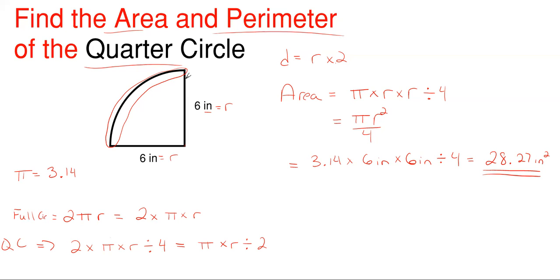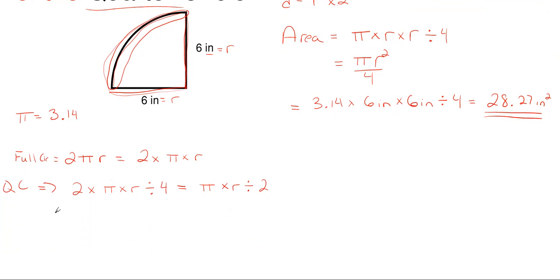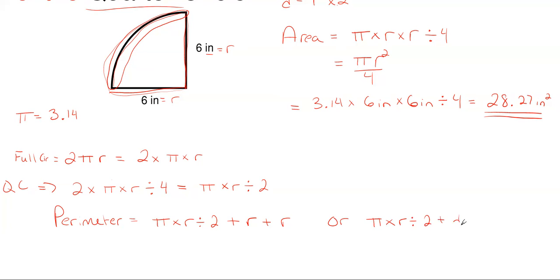This gives us the arc — the rounded portion of the perimeter — but we also have to add in the two straight sides of 6 inches each. Perimeter is the distance all the way around, so pi times r divided by 2 handles the curved portion, and then we add both straight portions. So the full perimeter formula is: pi times r over 2, plus r plus r, which equals pi times r over 2 plus the diameter.